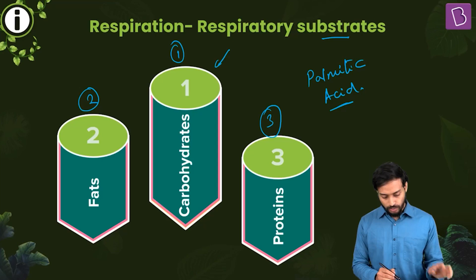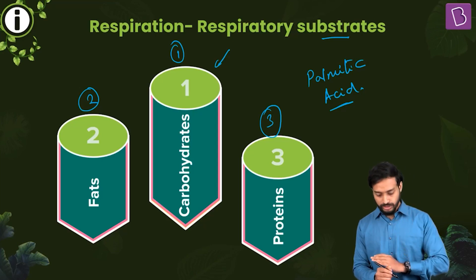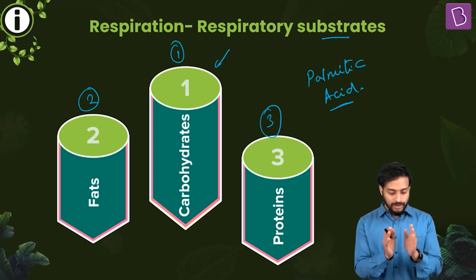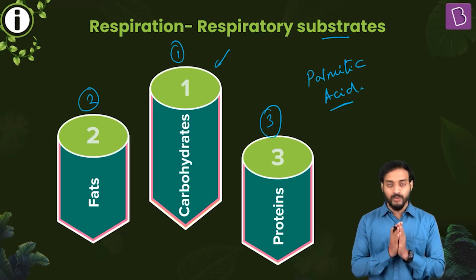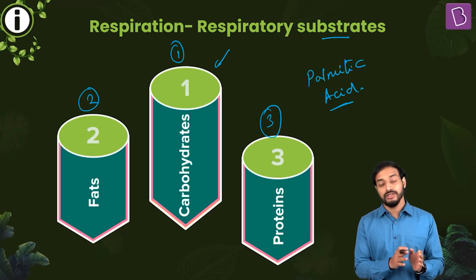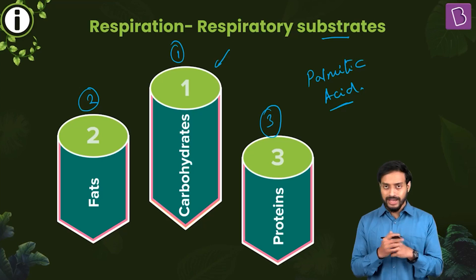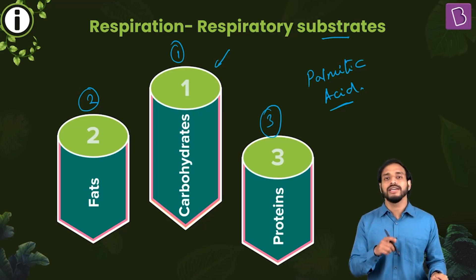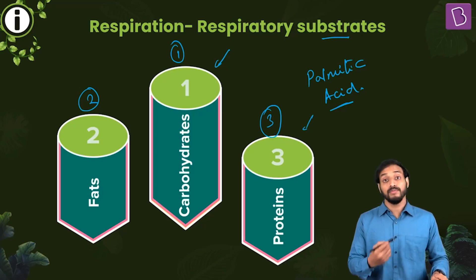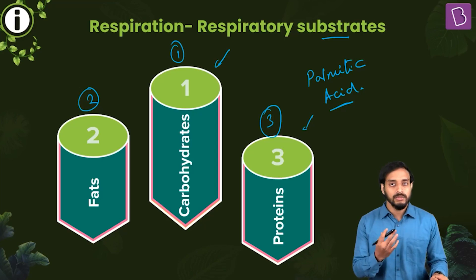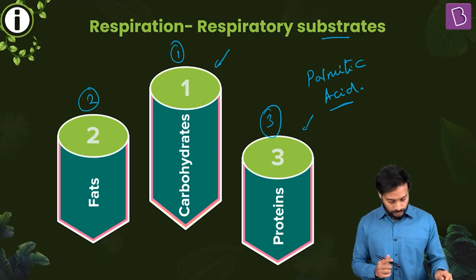Only when carbohydrates are exhausted will the body start utilizing fats, and when fats are exhausted it switches to proteins for energy. This generally occurs during starvation — during starvation your body starts utilizing proteins too, and that's why people tend to become thin, since muscles are made of proteins.